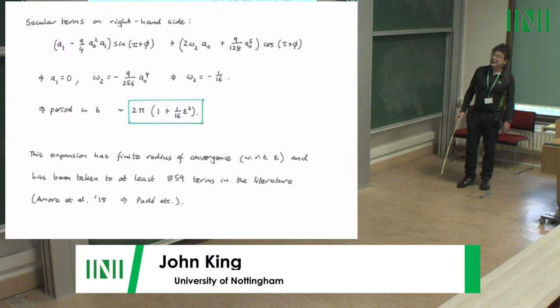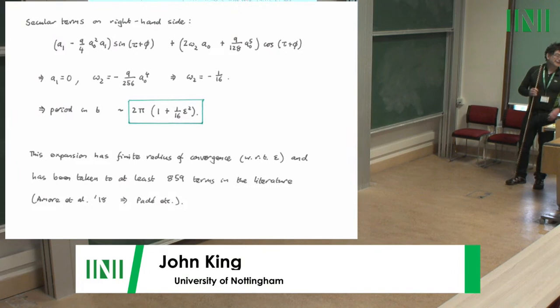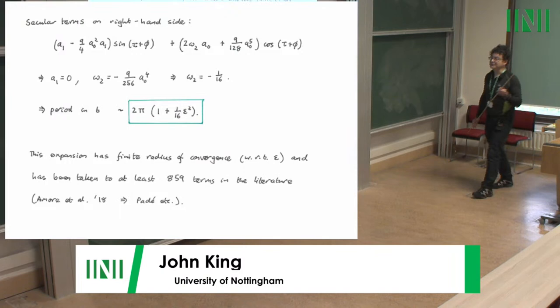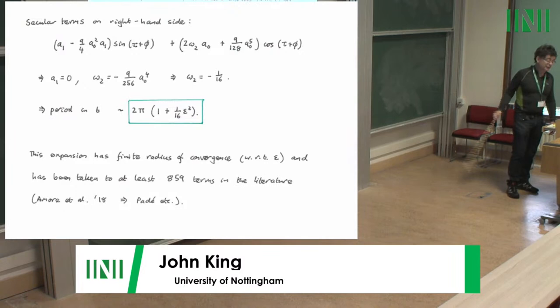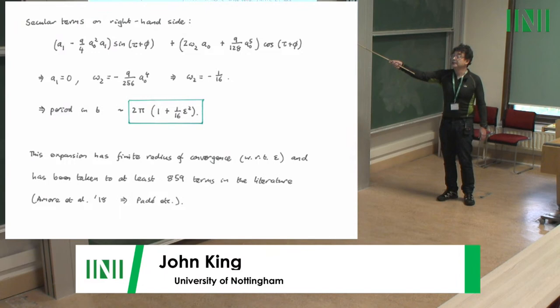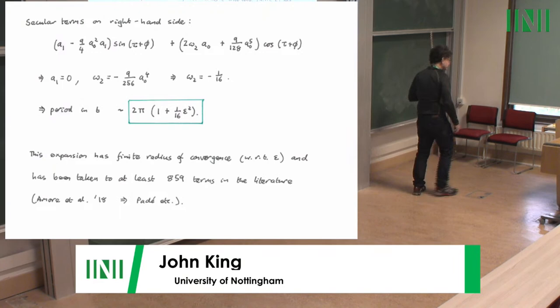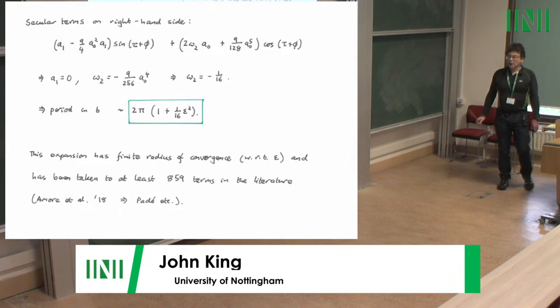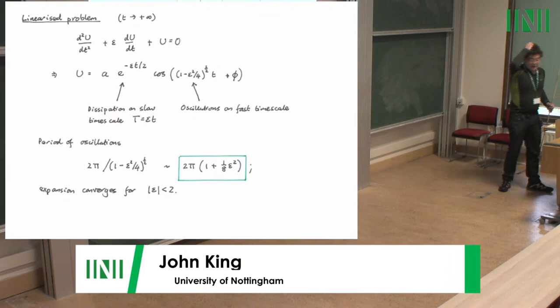There's a surprisingly large literature on this problem — the most recent reference I found computed up to 859 terms and then used Padé approximants to locate where the expansion converges. They found four neighboring branch points in the complex epsilon plane and claimed a hundred figures of accuracy. Occam's razor might place the singularities on the imaginary axis — you'd have only two by the epsilon-to-minus-epsilon symmetry — though I'm not sure what that means; if anyone does, please tell me.